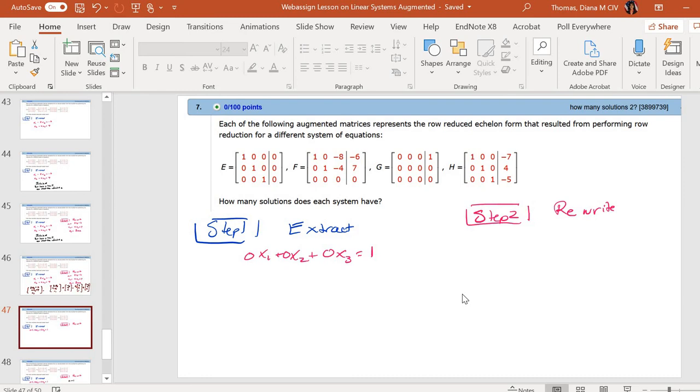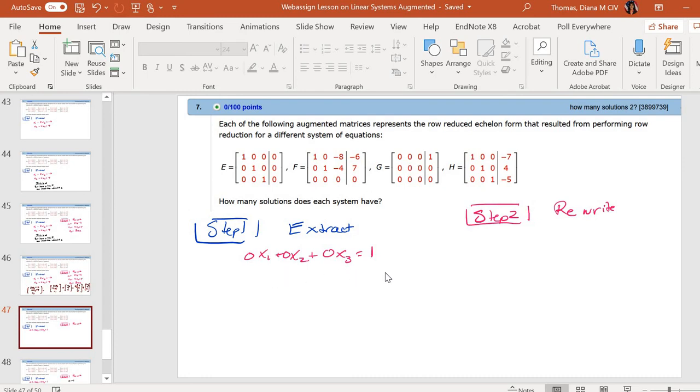Same thing with number 3. All of these, step 1 is to extract, and step 2 is to conclude. So if I extract the first one, I get 0 is equal to 1. When I write that, well, that just can't happen. So we say the system is inconsistent, and there is no simultaneous solution for g.